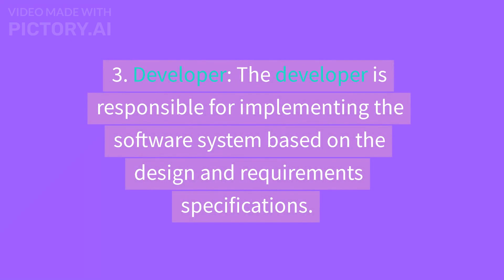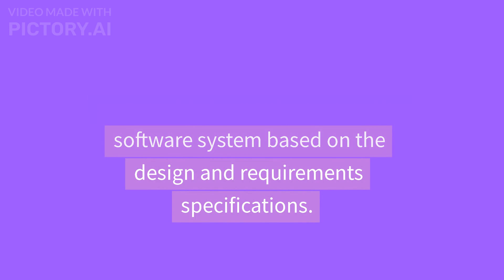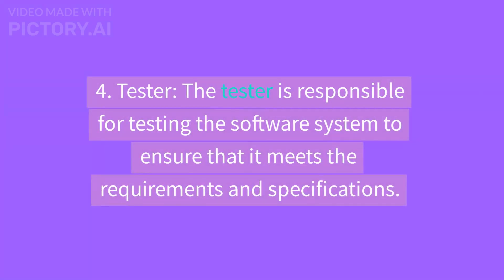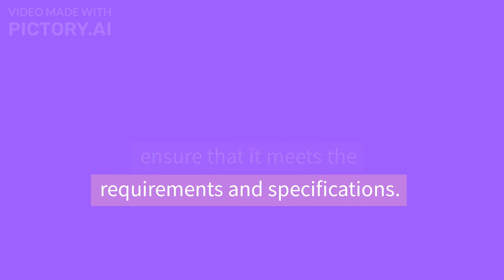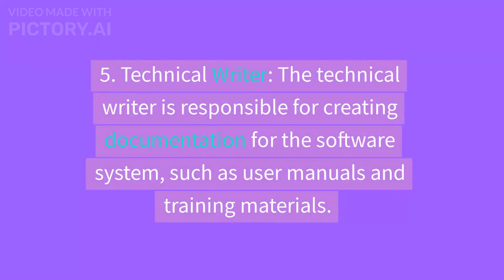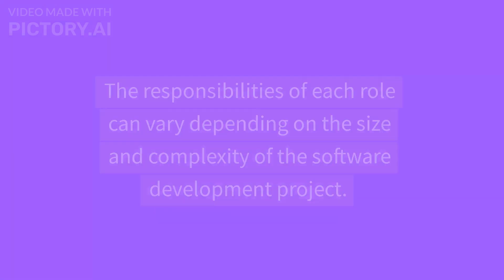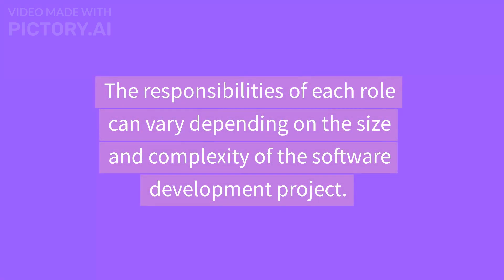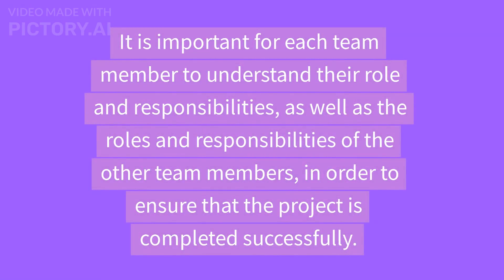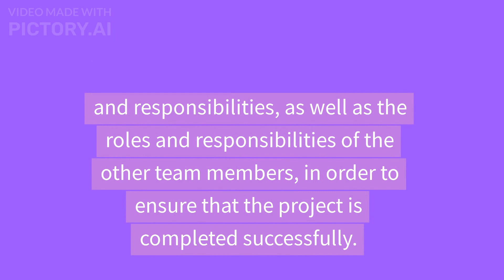3. Developer — responsible for implementing the software system based on the design and requirements specifications. 4. Tester — responsible for testing the software system to ensure that it meets the requirements and specifications. 5. Technical Writer — responsible for creating documentation such as user manuals and training materials. The responsibilities of each role can vary depending on the size and complexity of the project, and it is important for each team member to understand their own role as well as those of others.